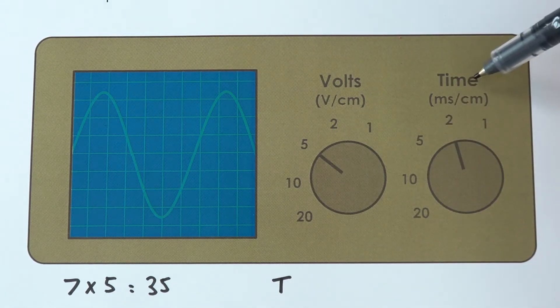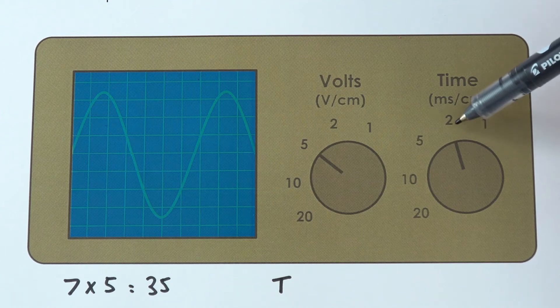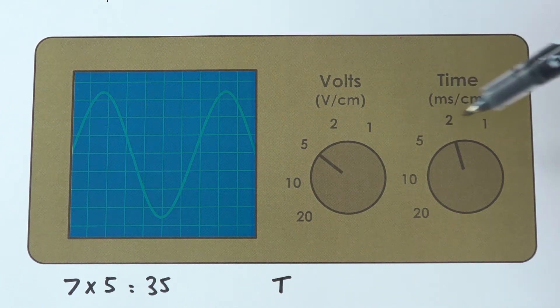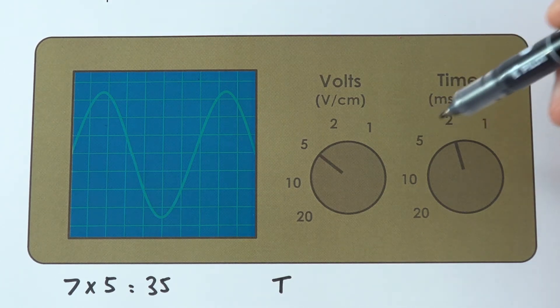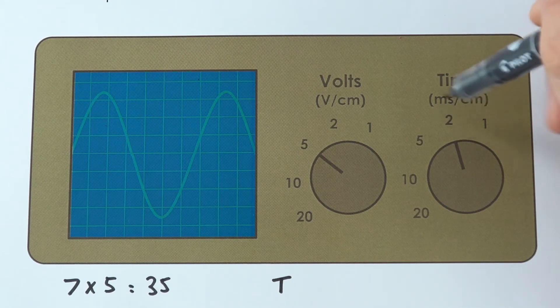On this it says that each centimeter, so each one of the squares here, is equal to two milliseconds. Often when we're looking at frequencies we have very short time periods, and this little m, just like you have in millimeters, just means milliseconds.